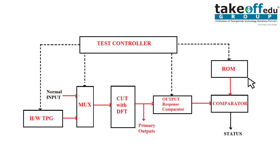You'll have a memory here to store the signature values. You compare those two values, and if they match, you'll have a status. This status tells us whether our test has failed or passed. If it passed, the entire operation went correctly; if it failed, there may be some internal disturbance. For all these things we need a controller — that is, a test controller. The BIST itself acts as this architecture, controlling all of the units.